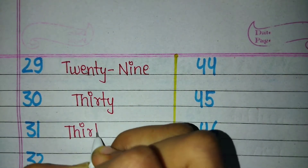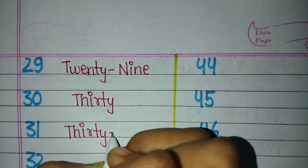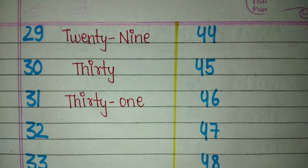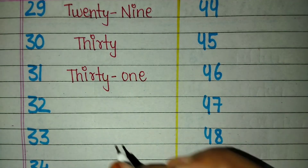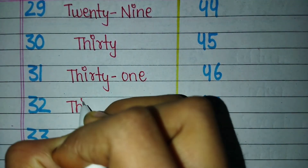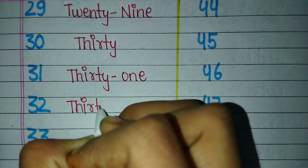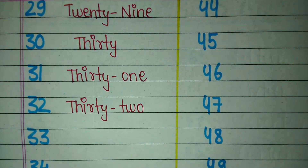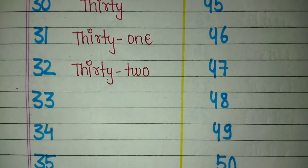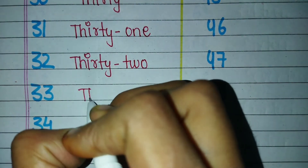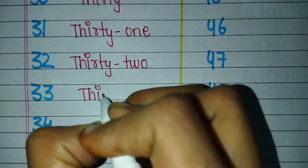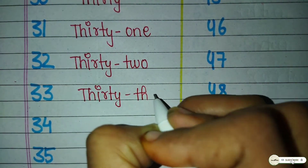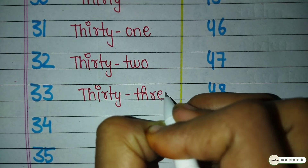Thirty-two — T-H-I-R-T-Y — 30, T-W-O — 2 — 32. Thirty-three — T-H-I-R-T-Y — 30, T-H-R-E-E — 3 — 33. Thirty — T-H-I-R-T-Y — 30.